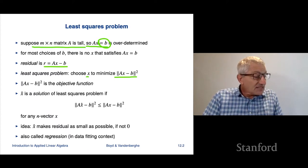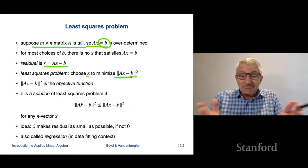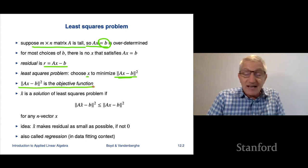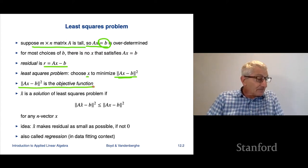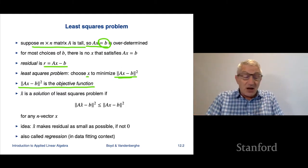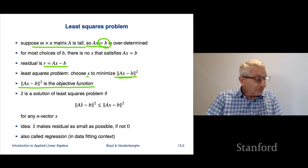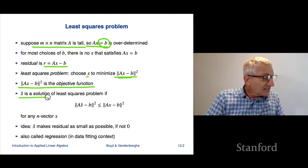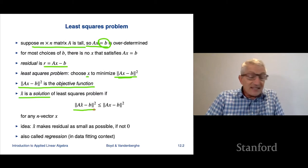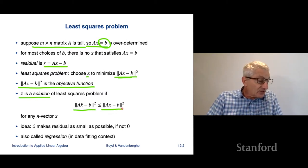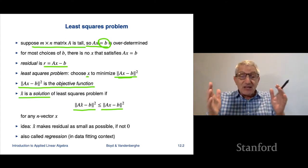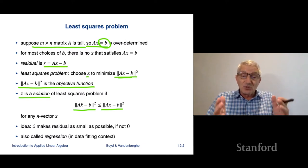We're going to minimize the sum of squares of the residual — that's how we choose x. This is called the objective function; it's a non-negative scalar, and we want it to be as small as possible. We say x-hat is a solution of the least squares problem if the objective value for x-hat is less than or equal to the objective value for any other x. Roughly speaking, it's the best you can do in terms of making the residual small.